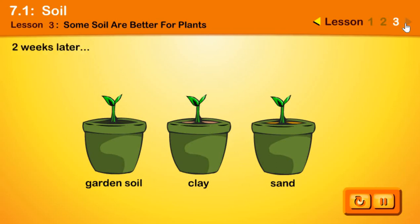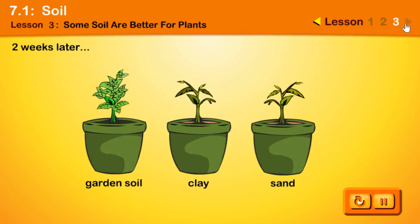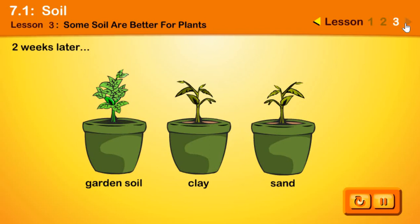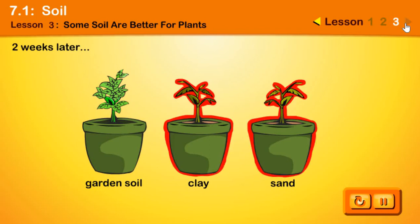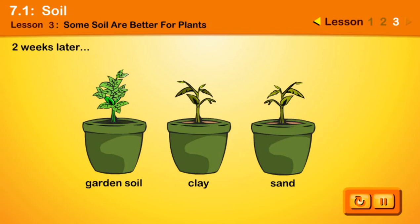Let us now compare the plants. The plant in the garden soil is growing very well. The plants in the other soils are not growing well. Our test shows that garden soil is the best for plants.